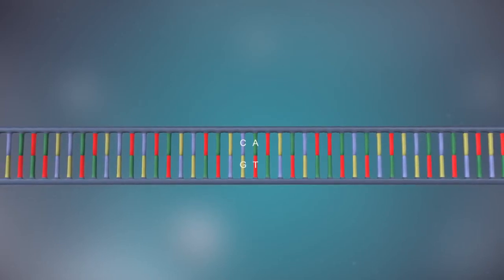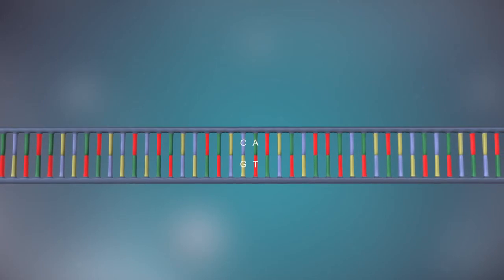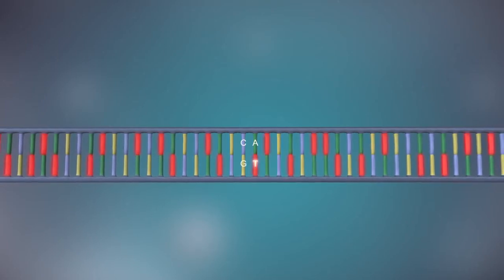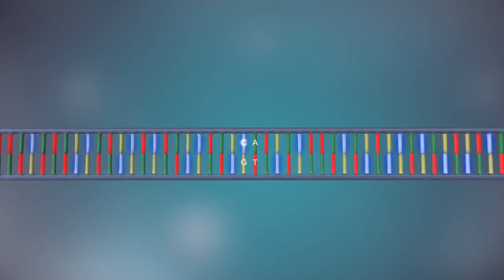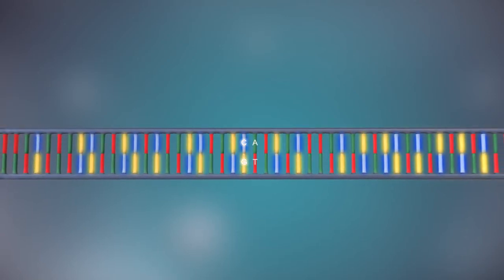The two strands are complementary. This means that wherever there's a T in one strand there will be an A in the opposite strand, and wherever there's a C there will be a G in the other strand.